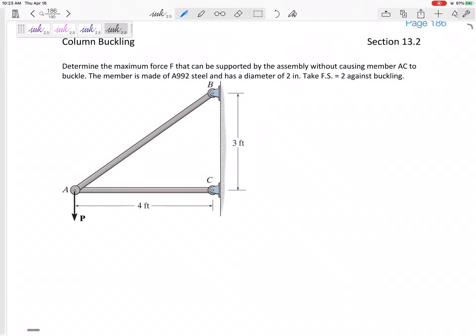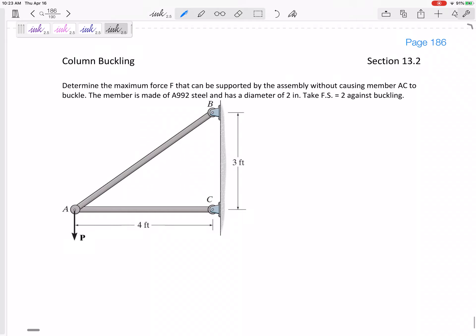All right, so let's look at this problem. We need to determine the maximum force P here that can be supported by the assembly without causing member AC to buckle. So we're worried about member AC to buckle. Now how's it going to buckle?